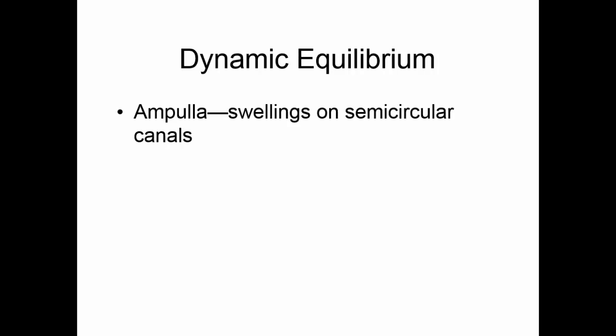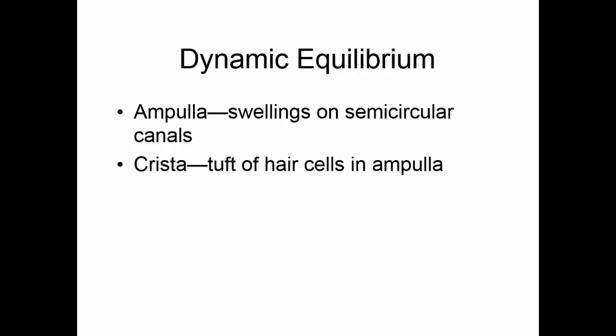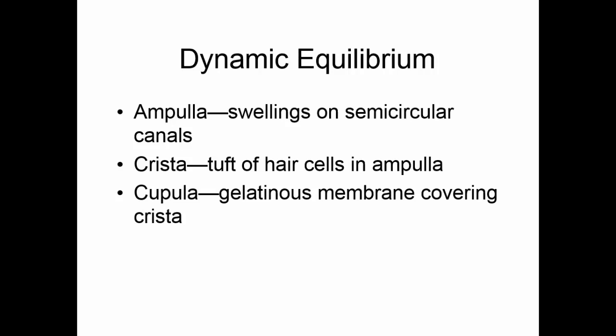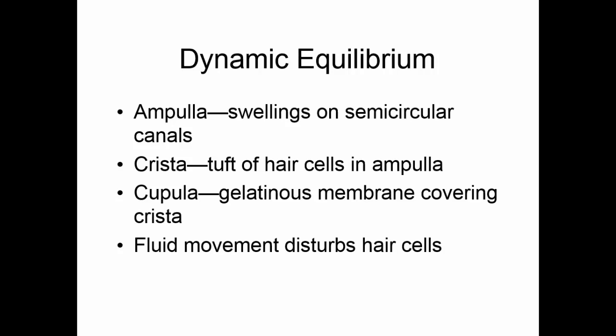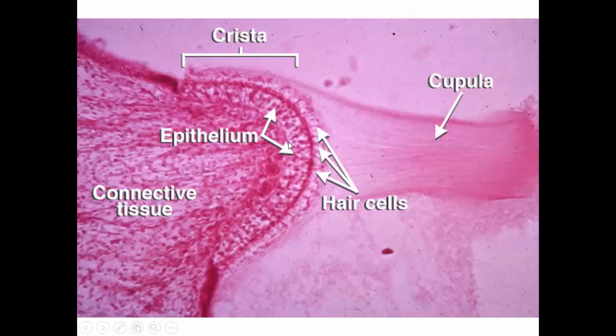Your dynamic equilibrium is controlled by the semicircular canals. On each semicircular canal there is a swelling called an ampulla. In each ampulla is a tuft of hair cells called the crista. Covering that tuft of hair cells is another gelatinous membrane called the cupula. Fluid movement in the semicircular canals causes the cupula to sway, disturbing the hair cells. As fluid flows back and forth, these hair cells will be bent forward and backward. Because you have three semicircular canals, one in each major plane, fluid movement tells the body that you're moving rotationally.